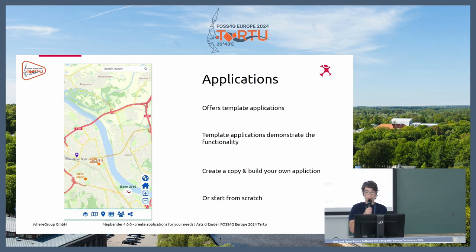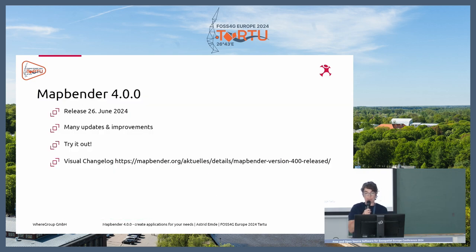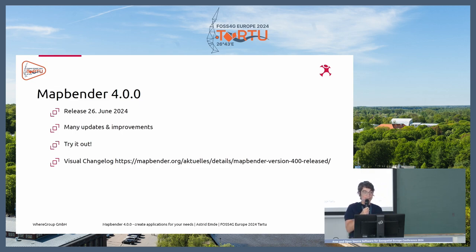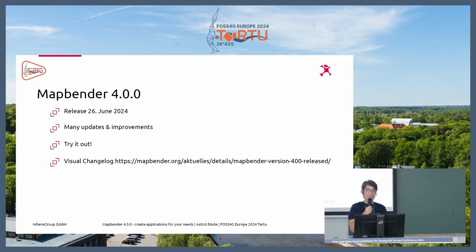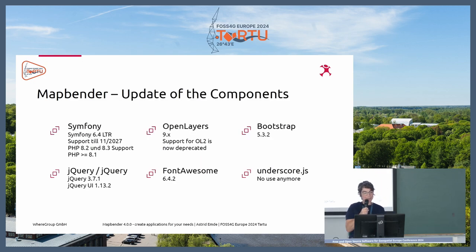We already provide a lot of functionality when you install MapBender — we call these elements, and you can use and configure every element to your needs. We offer elements for visualization, creating and editing data, search and print functionality, and much more. We offer three template applications that demonstrate what is possible with MapBender. You can easily copy them and build your own application, or start from scratch and build up the whole application as you want.